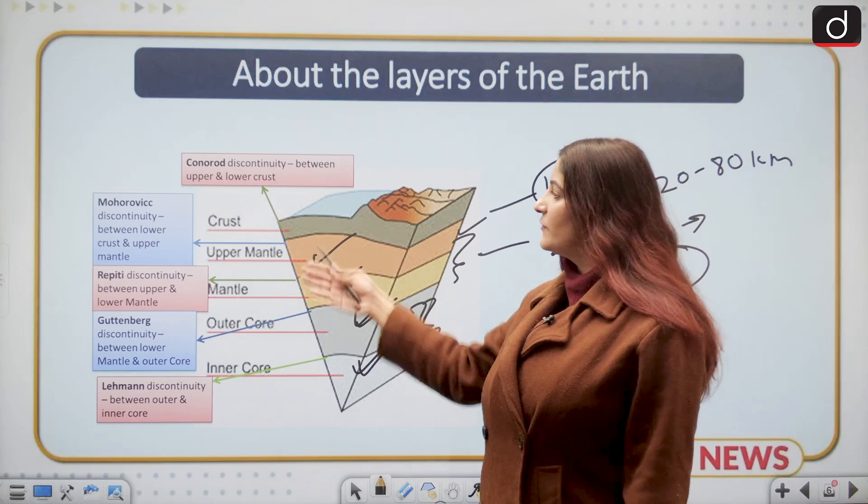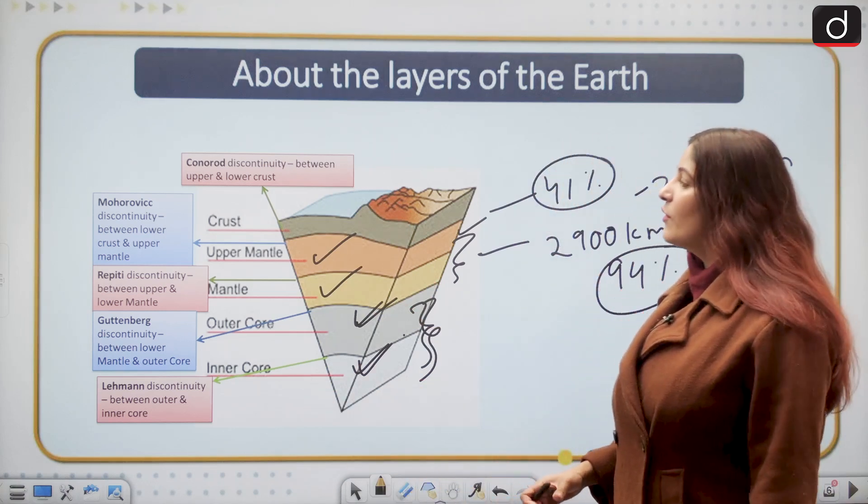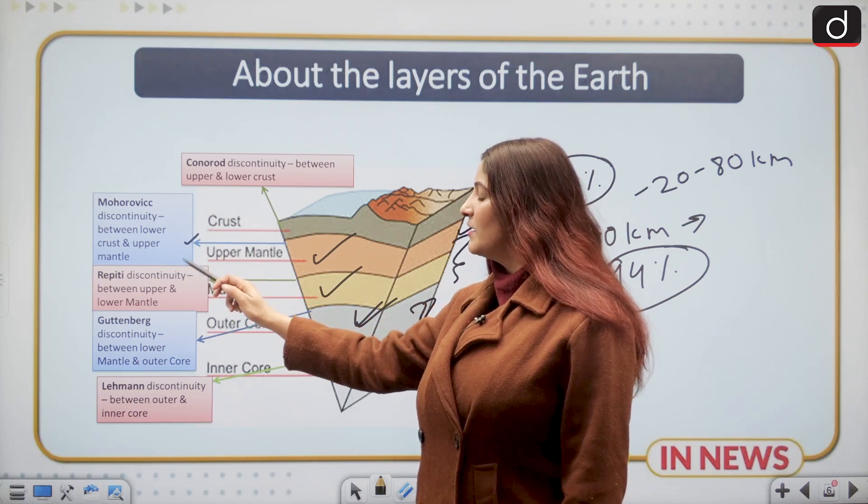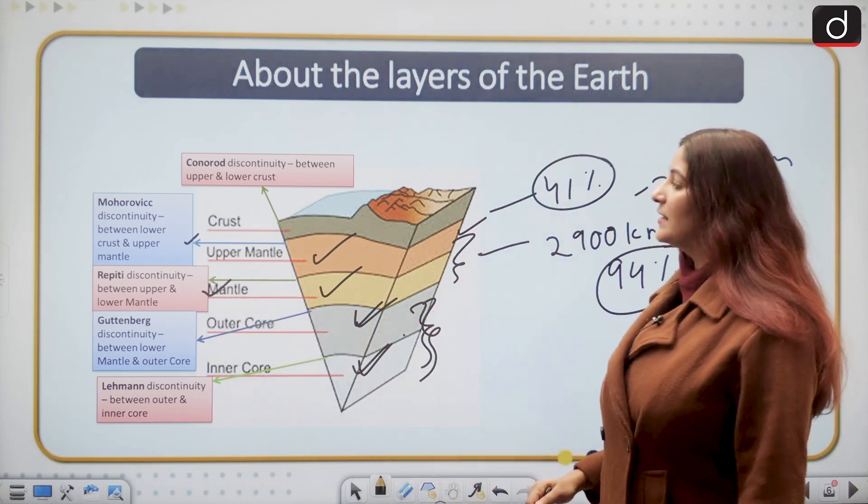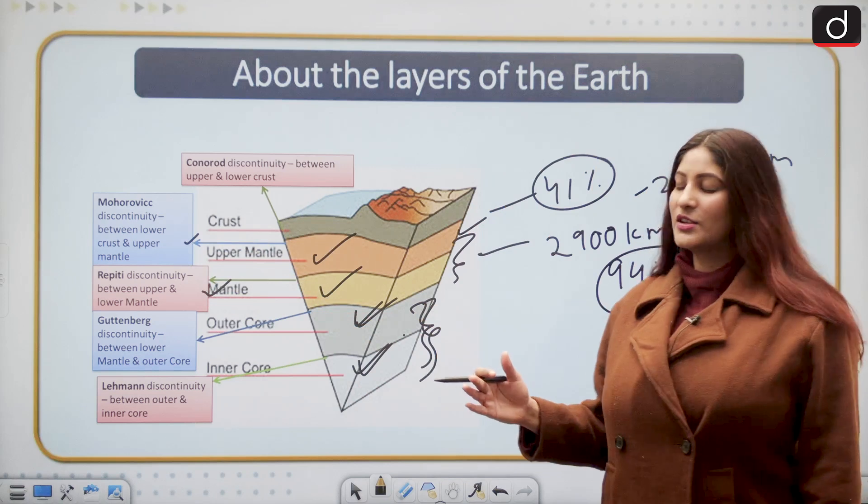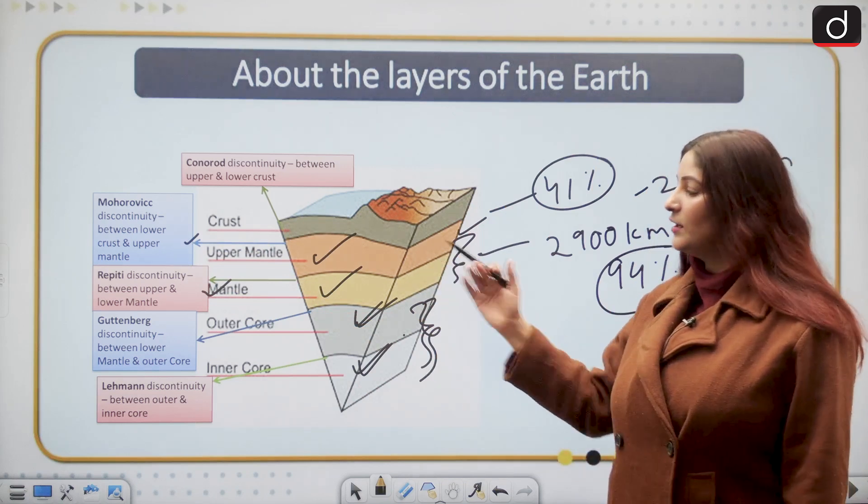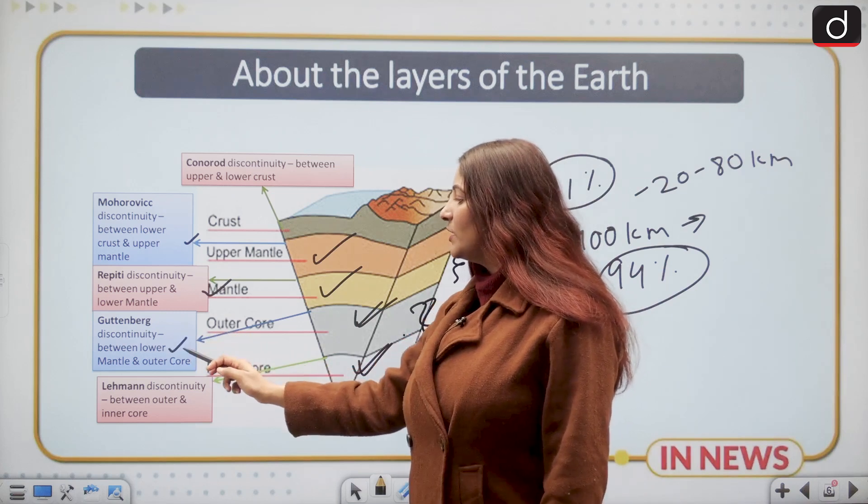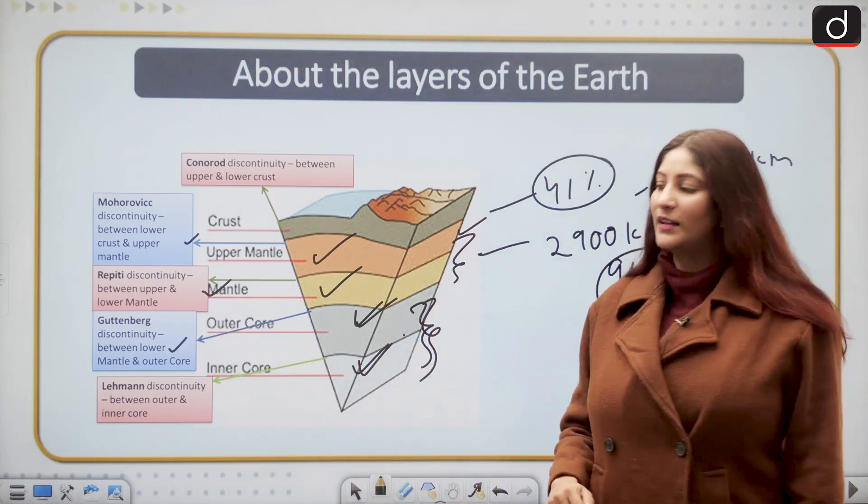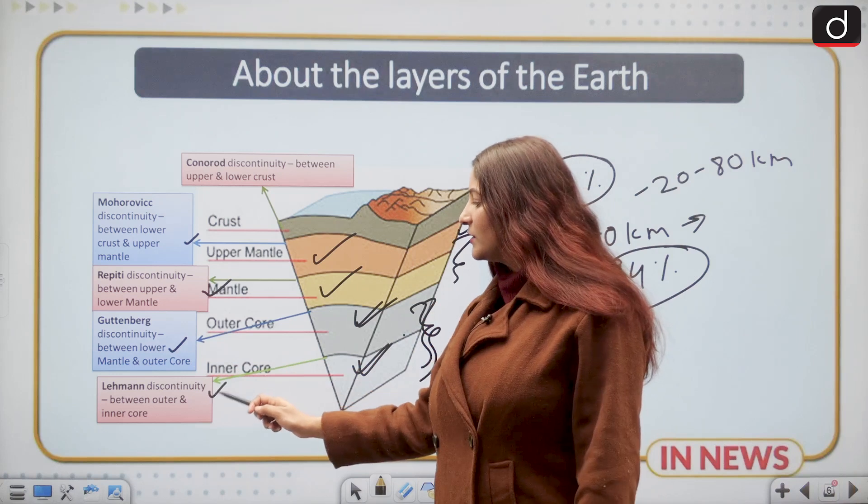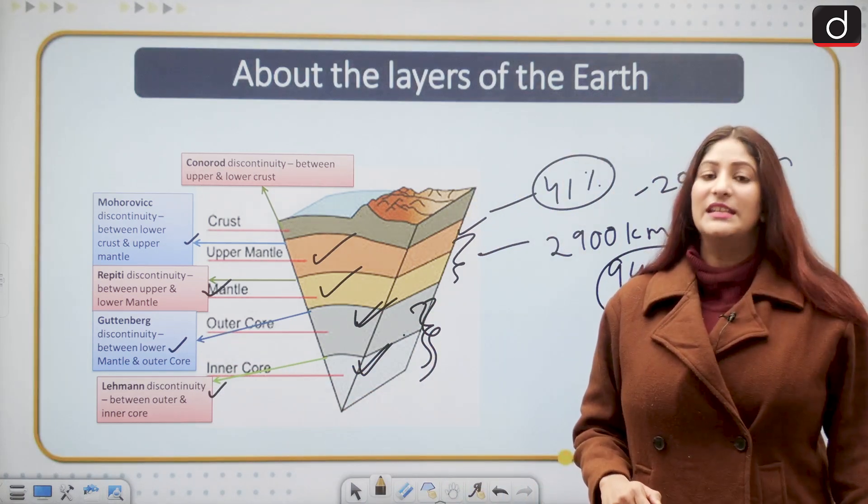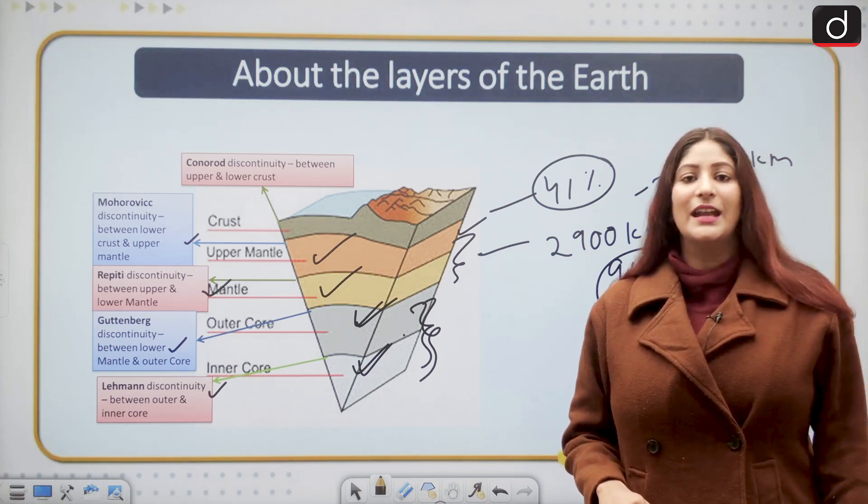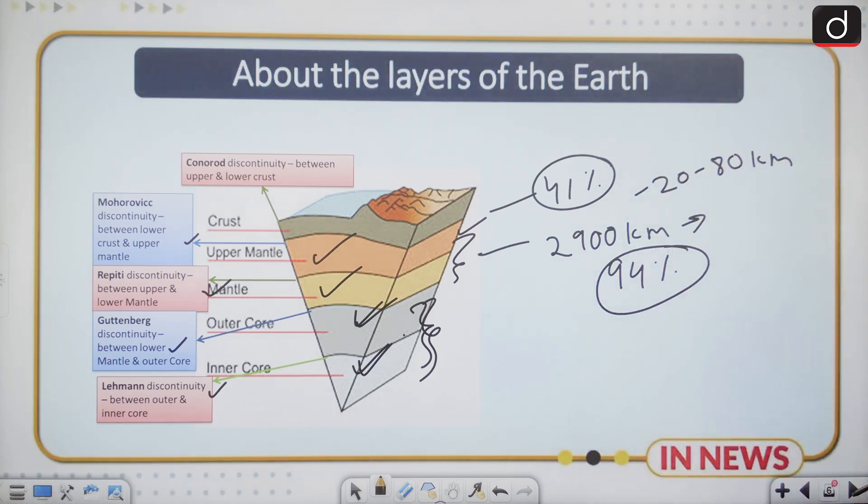Then as we can see the different discontinuities. The Mohorovičić discontinuity lies between the lower crust and the upper mantle. Repetti discontinuity lies between the upper and the lower mantle. And then we have the Gutenberg discontinuity between lower mantle and outer core. And finally the Lehmann discontinuity between the outer and the inner core. Lehmann was the Danish scientist who found out about the core in 1936.